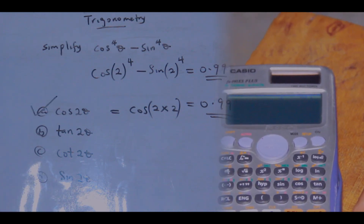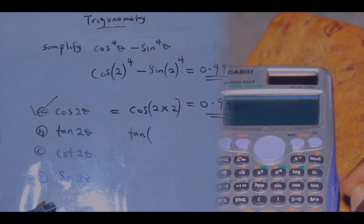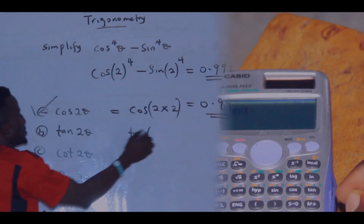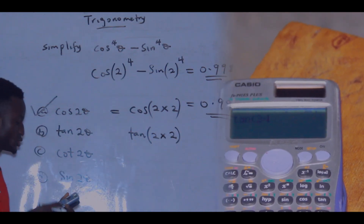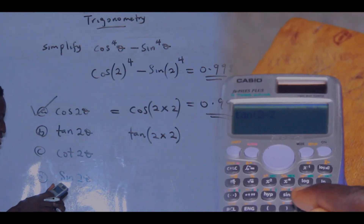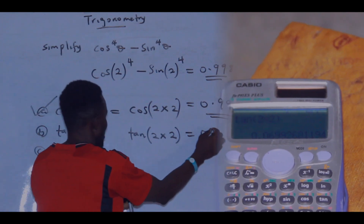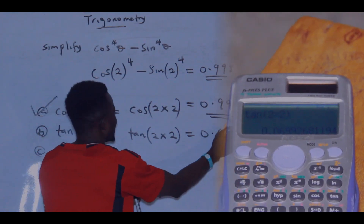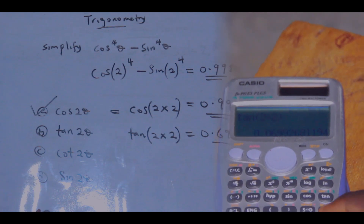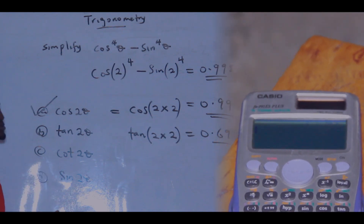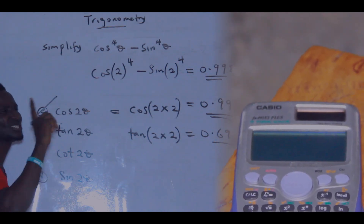Many won't believe that's the correct answer, so let's verify. Press AC, then test option B. Press tan — it will open the bracket immediately. We have three multiplied by theta, which is two, so press three times two, close the bracket, press equals. You observe that this value is 0.699, which is not the same. Press AC.